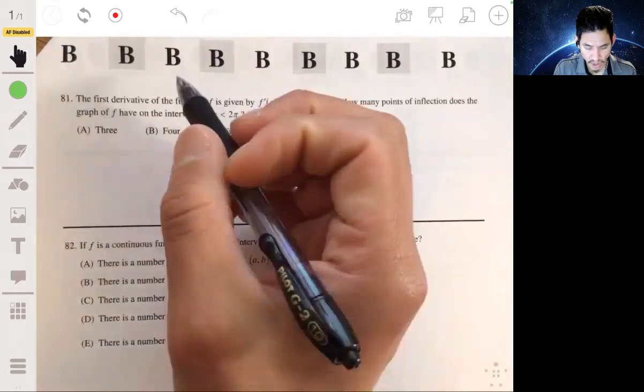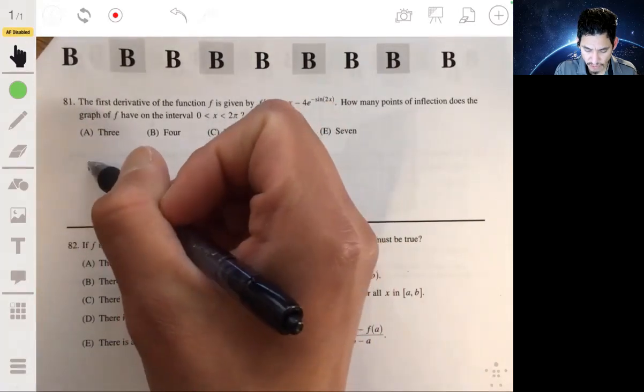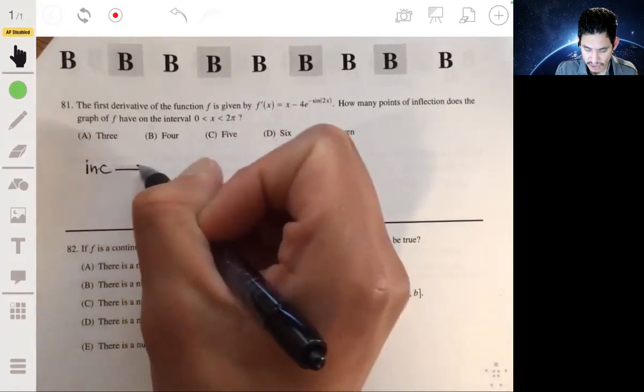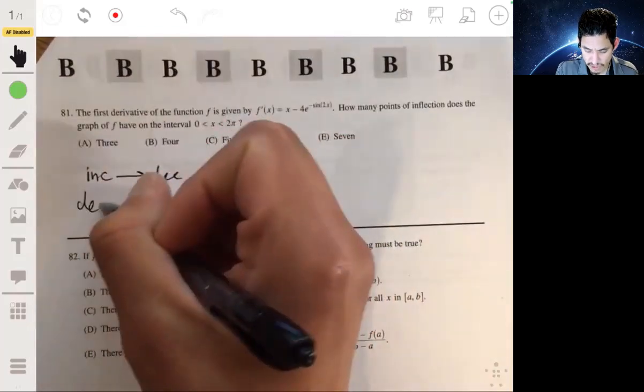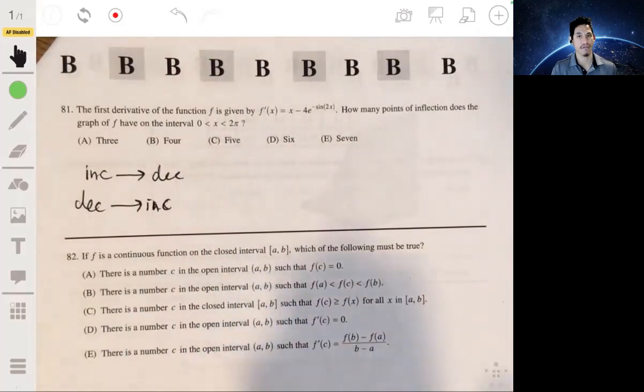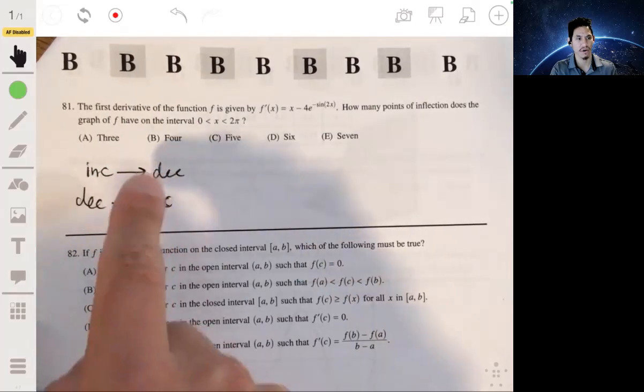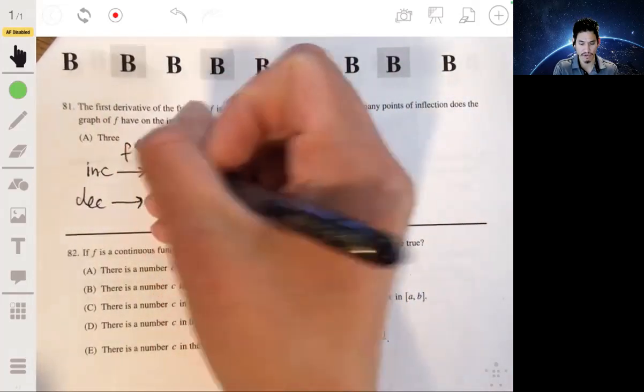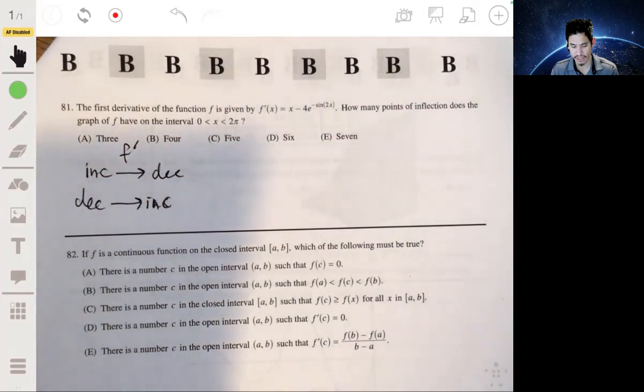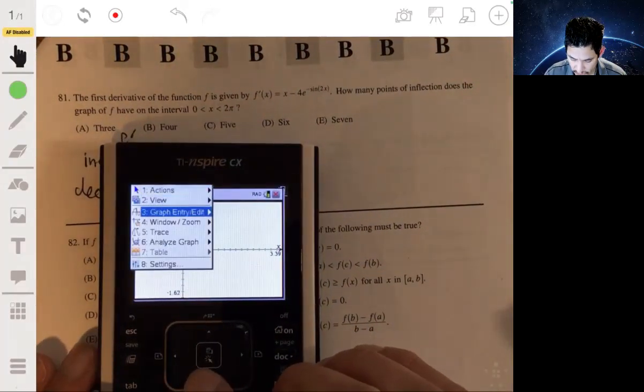Now, let me just first remind or review. Remember, a point of inflection is when the derivative changes from increasing to decreasing, or when it changes from decreasing to increasing. This is not the same as positive to negative, or negative to positive. That's a common mistake, but it's when it's changing its behavior, when it's changing from increasing to decreasing, or decreasing to increasing. This is f prime. So let's graph this, and we want to see on the graph where the behavior of the derivative changes.